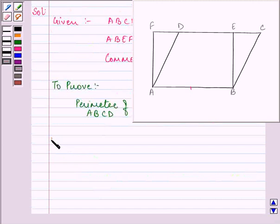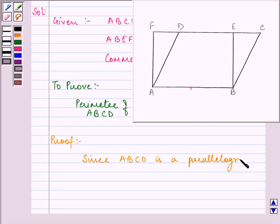Let us start with our proof. Now, we know that since ABCD is a parallelogram, then we can say that AB is equal to CD, right? Let this be the first equation.